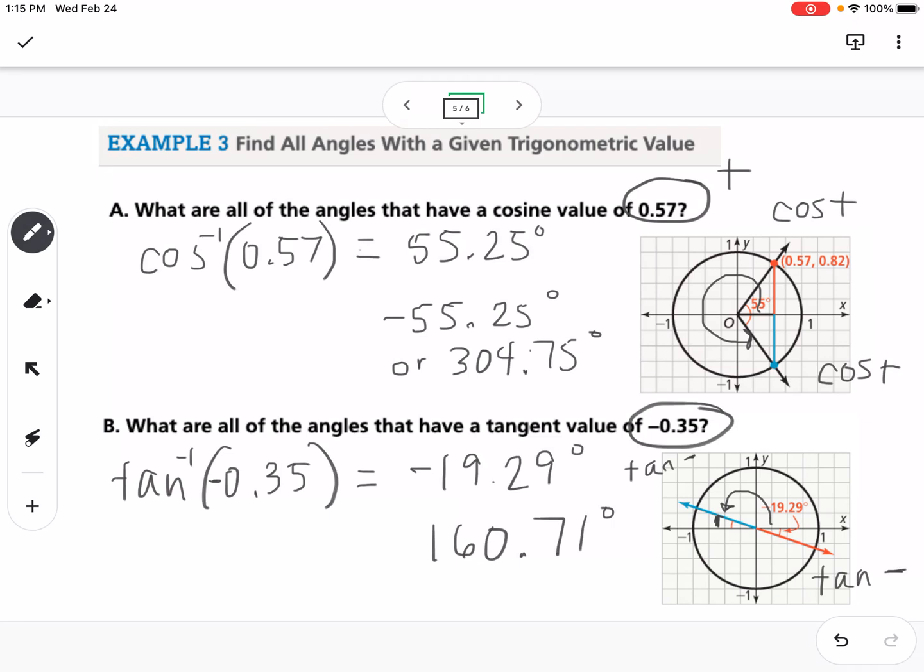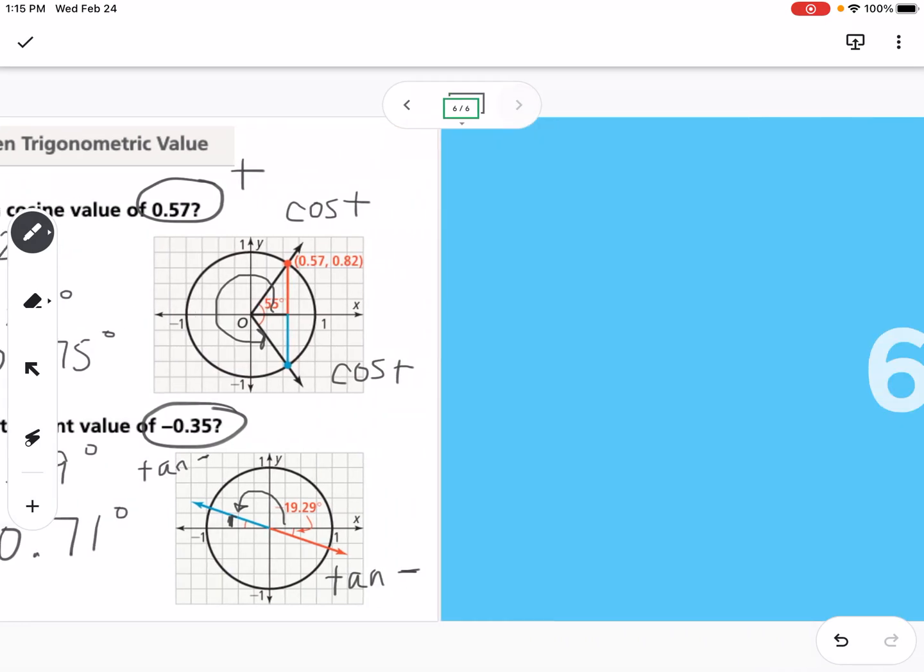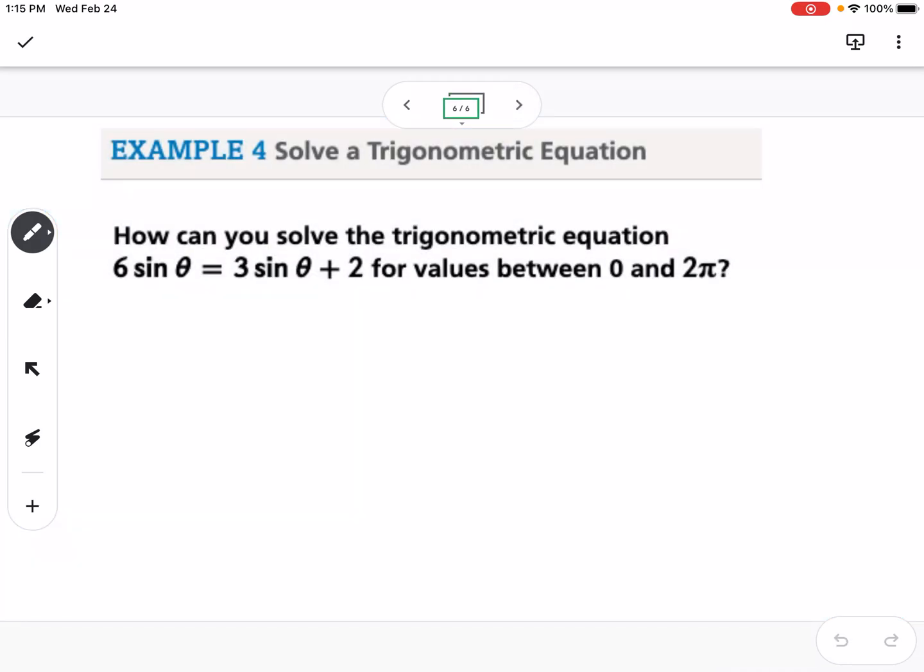What other quadrant does that happen? Okay. So our last example is how can you solve the trigonometric equation 6 sine of theta equals 3 sine of theta plus 2 between 0 and 2 pi. So we're going to solve this just like we would a normal equation. So I'm going to subtract 3 sine of theta from both sides.